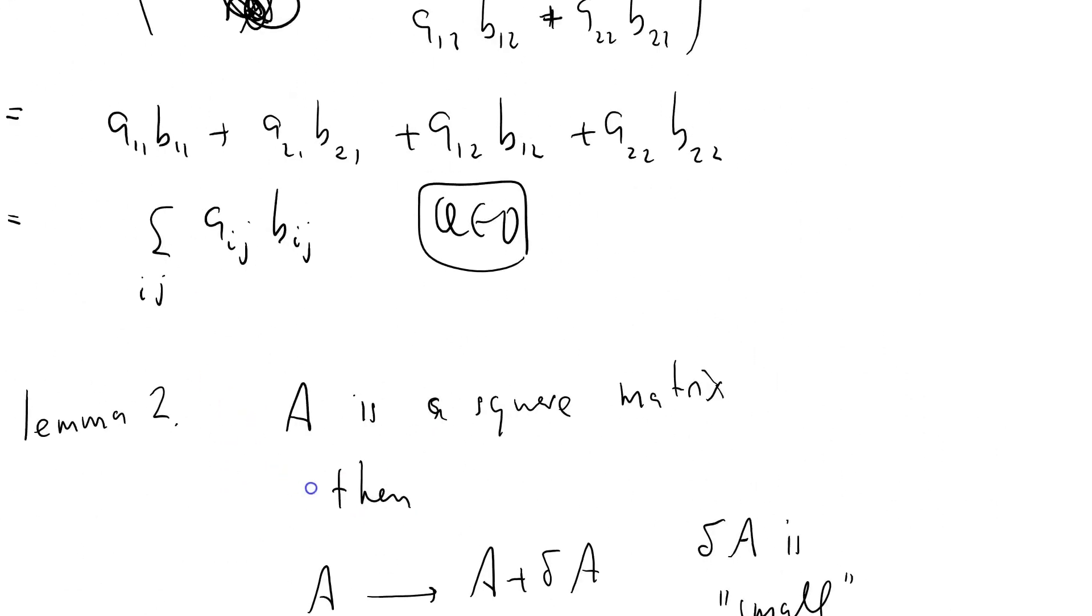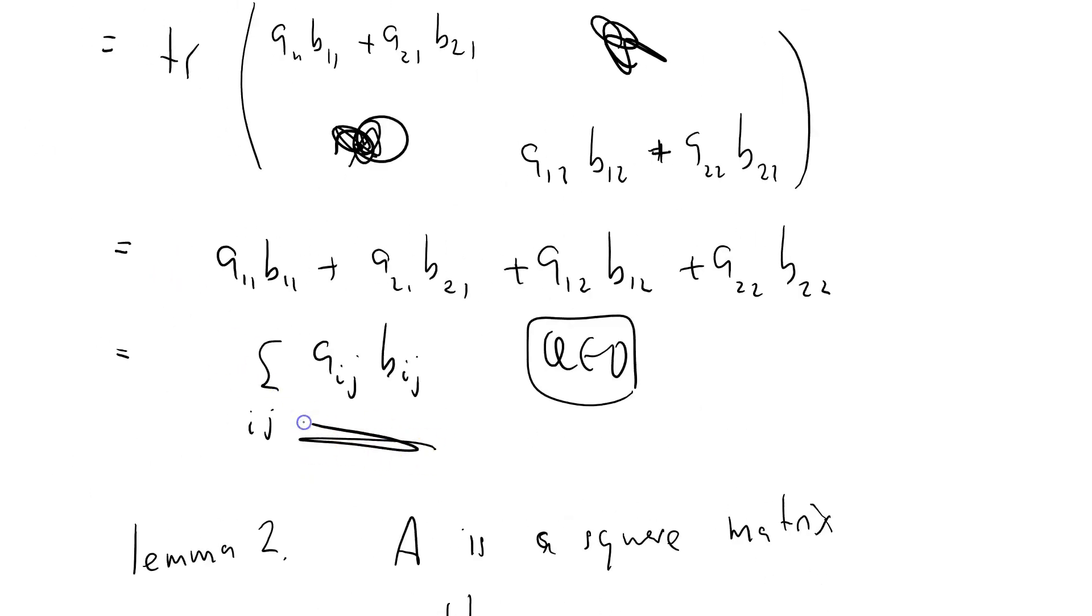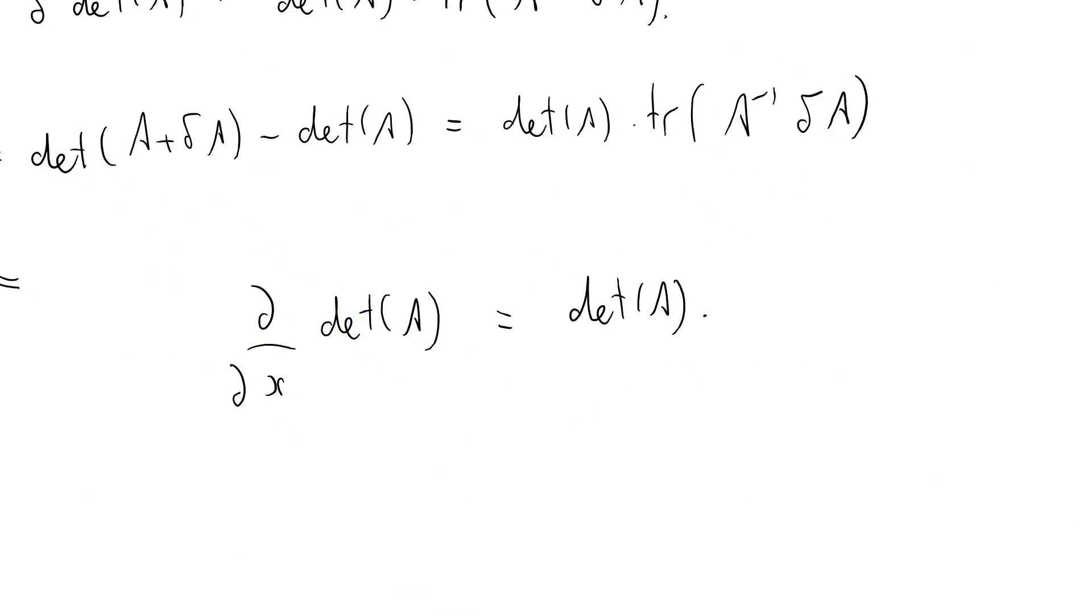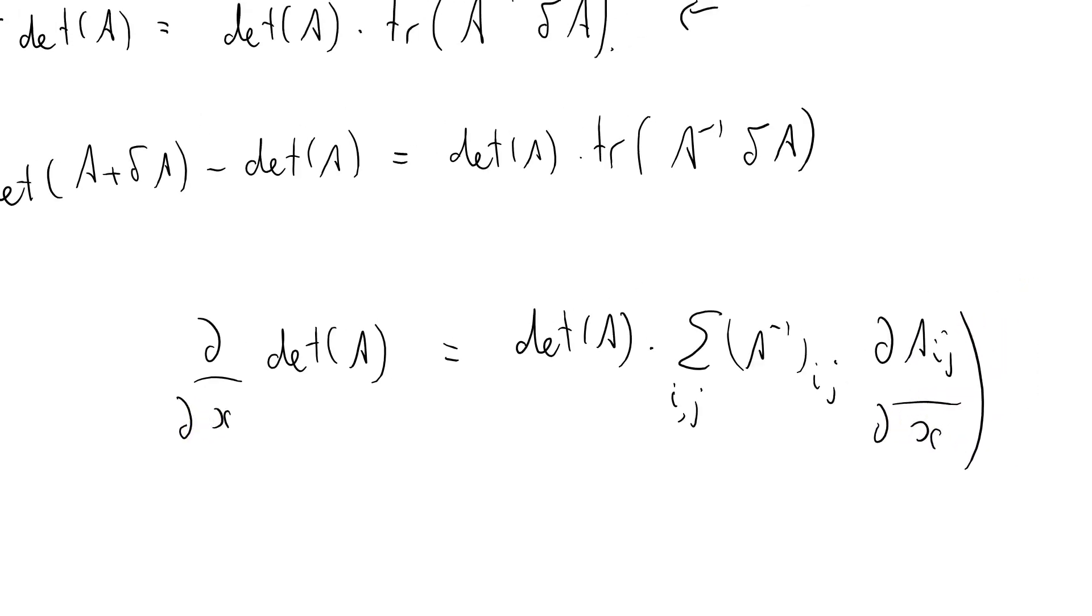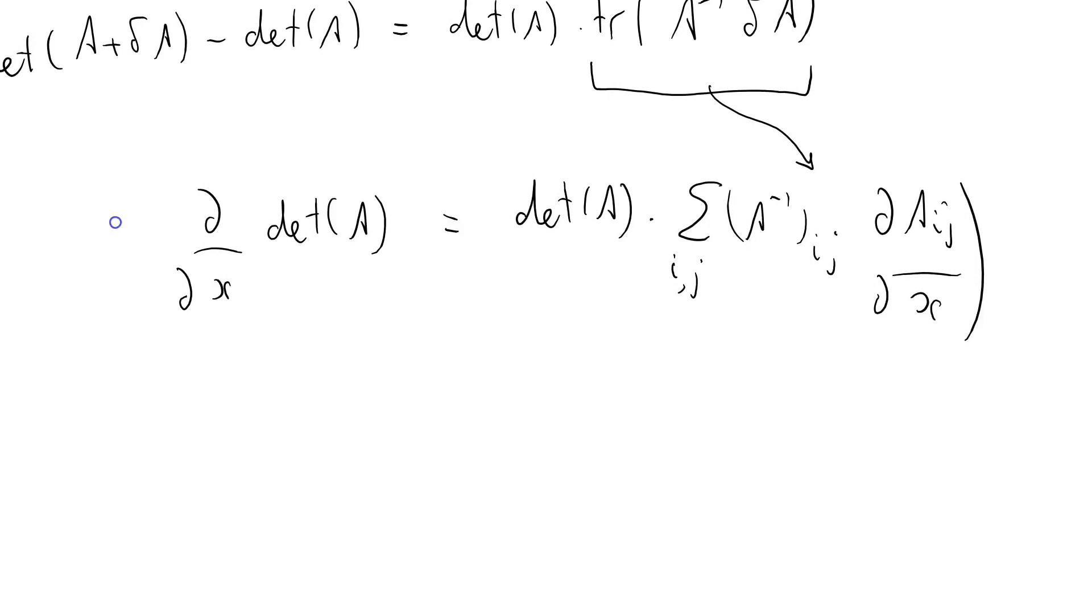Well, from my lemma, from the lemma up here, it's just this thing here. There it is. times sigma over i and j, a minus 1 ij, di aij by di x. Okay? Simply by this formula here, because I know that the trace of the product of two matrices equals the sum of the element-wise product of those elements. And I've just differentiated with respect to di x. So that's what we've got here.